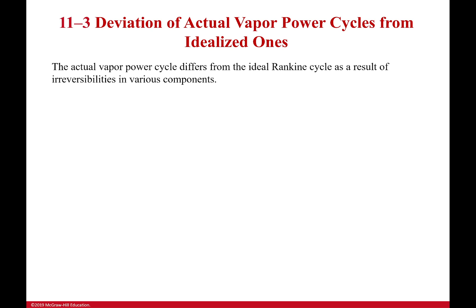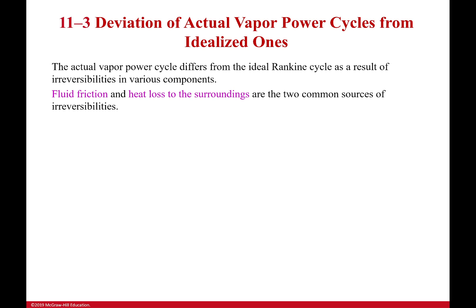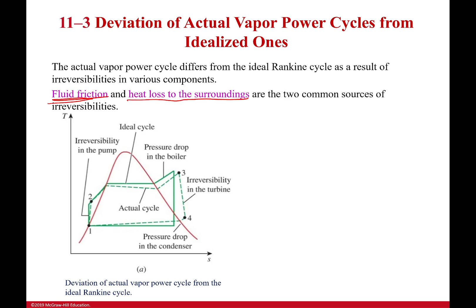In the ideal Rankine cycle there are no irreversibilities. In real Rankine cycles, things like fluid friction and heat loss to the surroundings are probably two of the most common sources. The turbine or compressor loses heat, and fluid friction slows things down throughout, so an actual cycle is going to be very different.